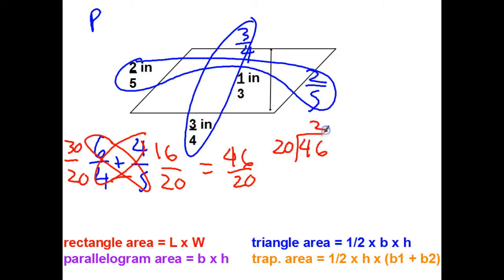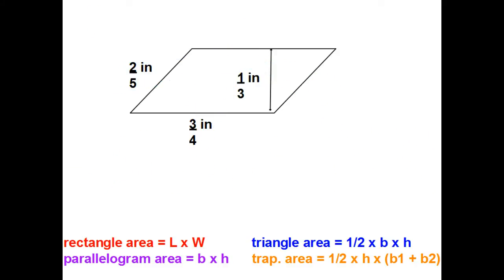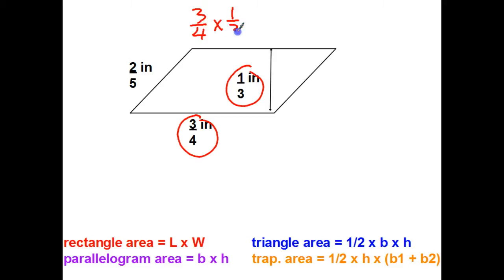20 goes into 46 two times with a remainder of 6, giving me two and six-twentieths. Both numerator and denominator are even, so I divide both by 2: six divided by 2 is 3, twenty divided by 2 is 10 — two and three-tenths inches for the perimeter. For area, base times height: three-fourths times one-third — top times top is 3, bottom times bottom is 12.